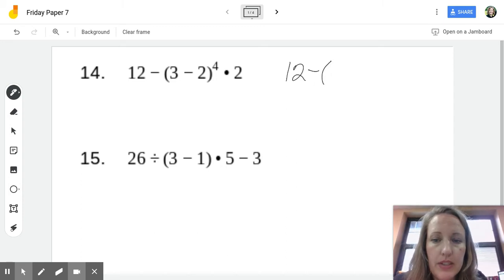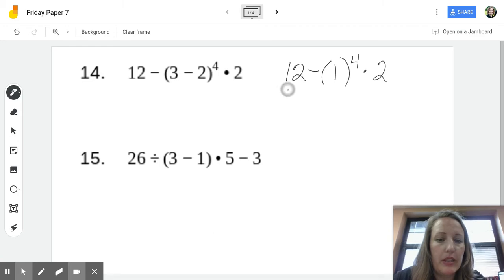And in those parentheses, I have 3 minus 2, which is 1 to the 4th power, times 2. Okay, now I have to evaluate this exponent, PE. So, 12 minus 1 times 1 times 1 times 1 is 1 times 2.